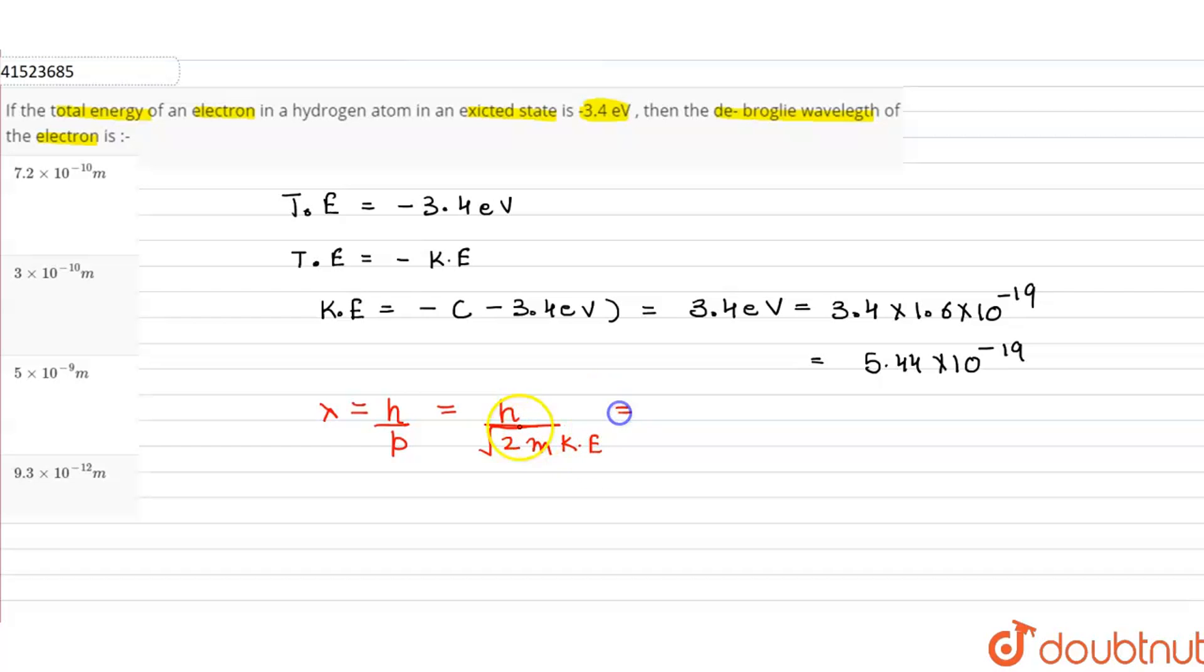Now, h is Planck's constant. Planck's constant value is 6.63 times 10 to the power minus 34 over square root of 2 times mass of electron.